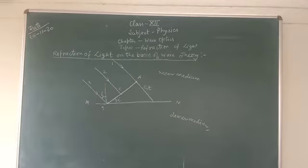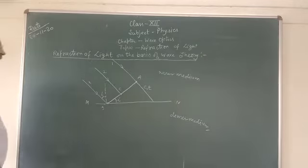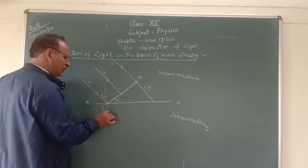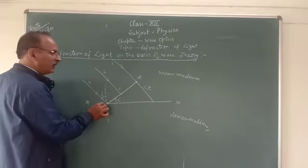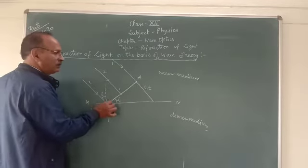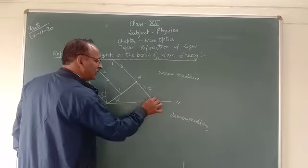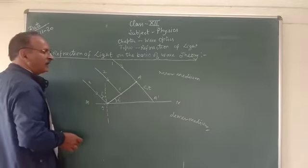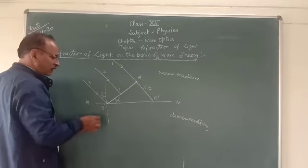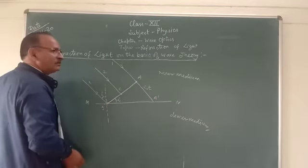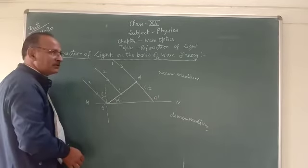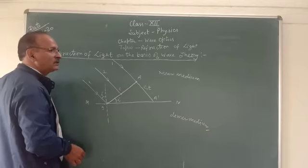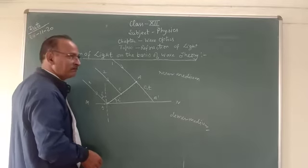Distance is equal to speed multiplied by time. When the secondary wavelet starting from B moves into the denser medium, the speed is less in the denser medium, so it covers a lesser distance, that is c2·t.